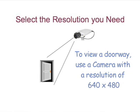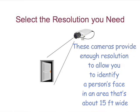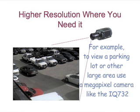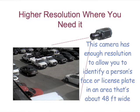You can select the resolution you need. For example, to view a doorway, use a camera with a resolution of 640x480. These cameras provide enough resolution to allow you to identify a person's face in an area that's about 15 feet wide. You can select a higher resolution camera where you need it. For example, to view a parking lot or other large area, use a megapixel camera like the IQ732. This camera has enough resolution to identify a person or a license plate in an area that's about 48 feet wide.